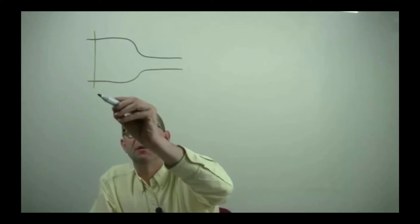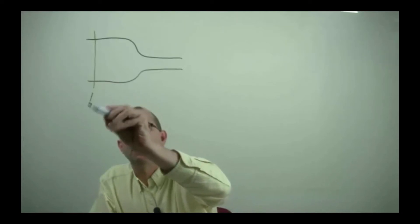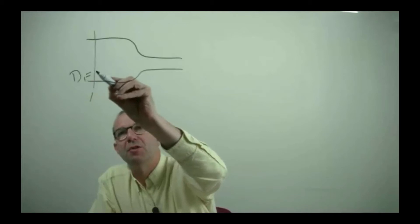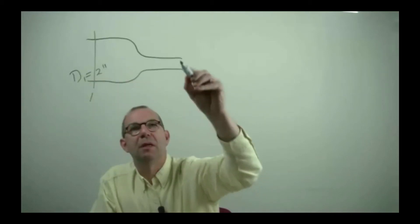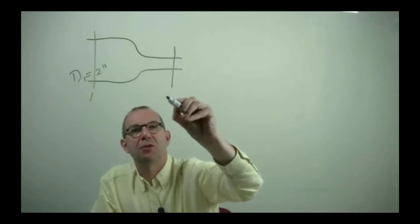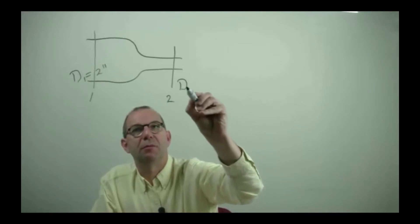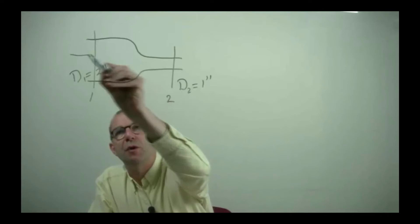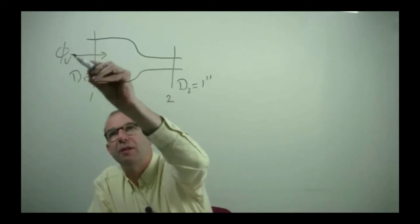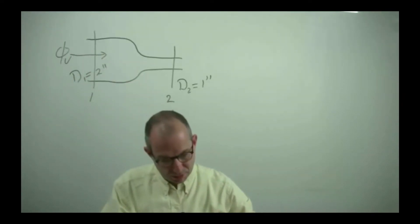Upstream of the narrowing at point 1 we have that the diameter d1 is 2 inch. Downstream at 2 the diameter is only 1 inch. Water is flowing in at a given flow rate of 10 liters per minute.